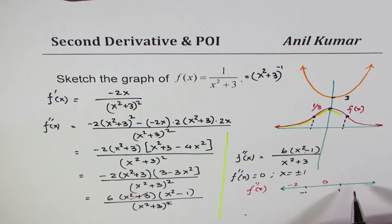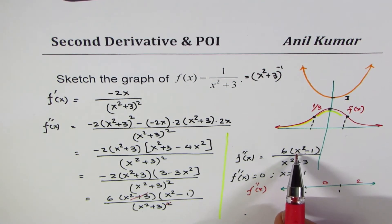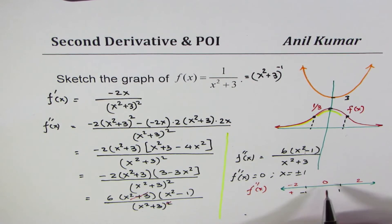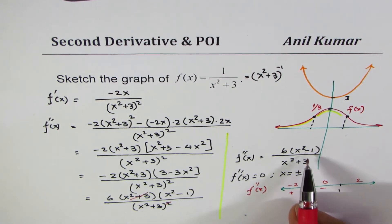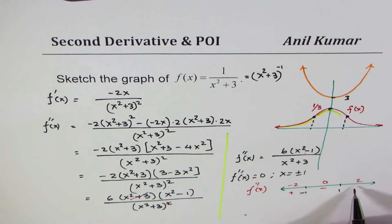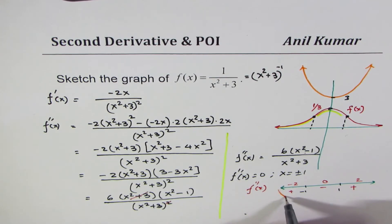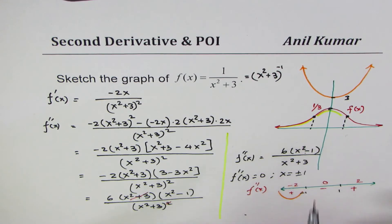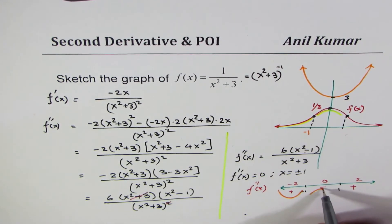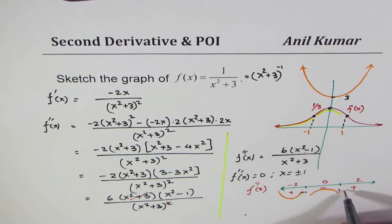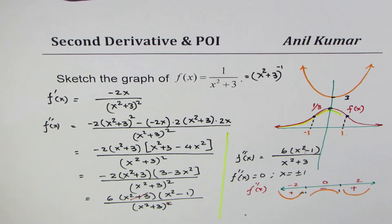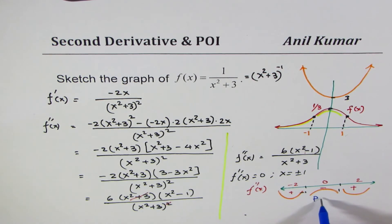Testing x = −2 (left of −1): (4 − 1) is positive, so f'' > 0 — concave up. Testing x = 0 (between −1 and 1): (0 − 1) is negative, so f'' < 0 — concave down. Testing x = 2 (right of 1): (4 − 1) is positive, so f'' > 0 — concave up. Since concavity changes at both x = −1 and x = 1, both are points of inflection.